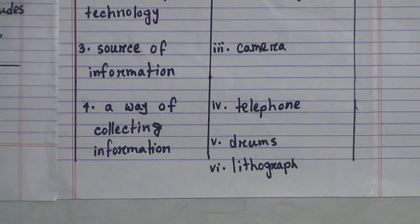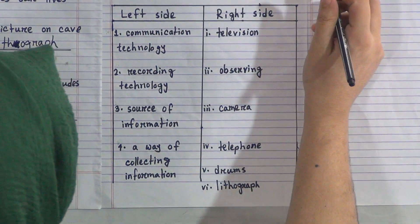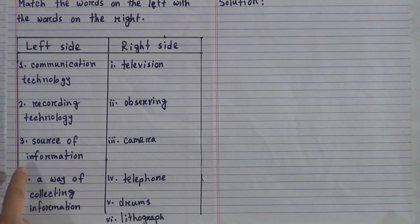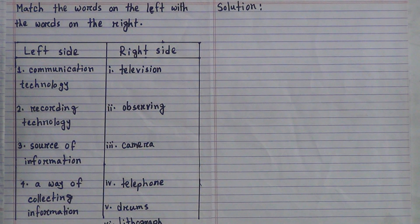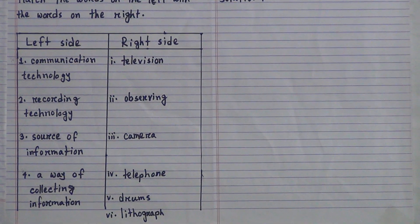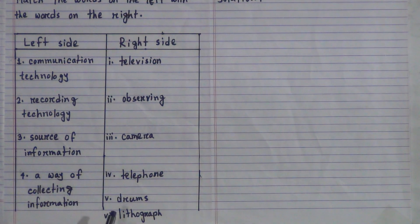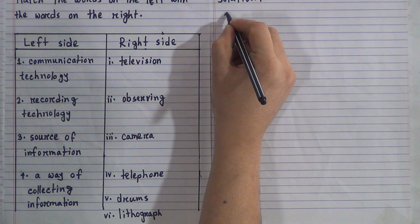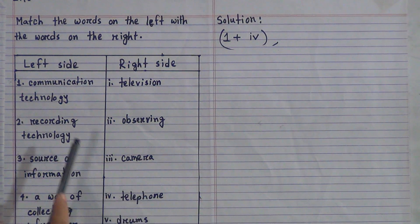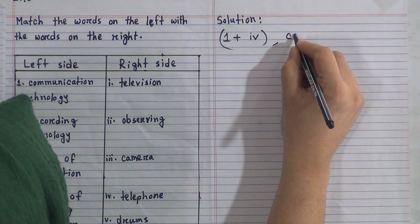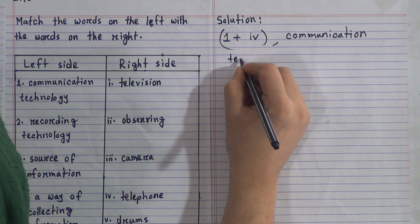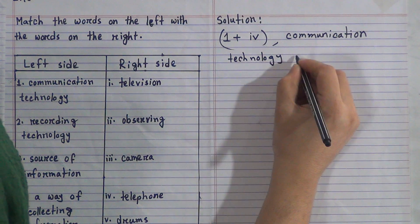Now we will solve this matching. Left side number 1 is communication technology. From the options — television, observing, camera, telephone, drums, lithograph — communication technology will be matched with number 4, telephone. So we write: one plus four, communication technology plus telephone.